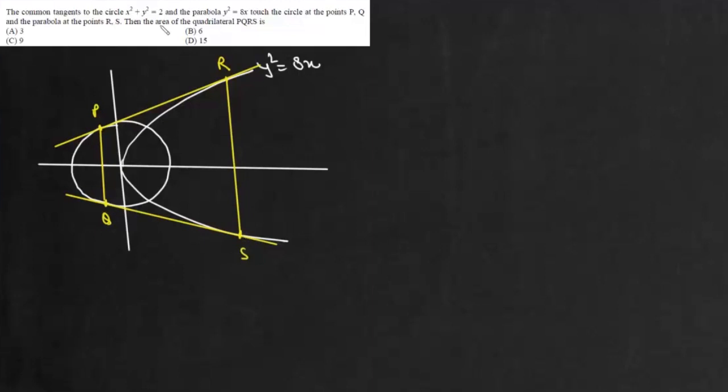Now we can write equation of tangent to this circle and it is given by y equals mx plus minus R under root 1 plus m squared. And for this parabola, it is given by y equals mx plus a by m and in this case a is 2. So it will be 2 by m.